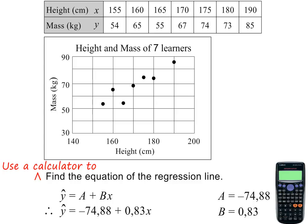The equation of the regression line is therefore y hat equals minus 74.88 plus 0.83x. Please pause the lesson if you need to.